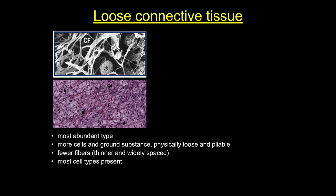Let's start with loose connective tissue. This is the most abundant connective tissue, and it's characterized by more cells and fewer fibers. When you think of 'loose,' this term actually relates to the fibers, not the cells, and the tissue really is physically loose and pliable. Here you see an electron micrograph showing some of these fibers, and an H&E stained section showing the large number of cells. Most connective tissue cell types are found in loose connective tissue.